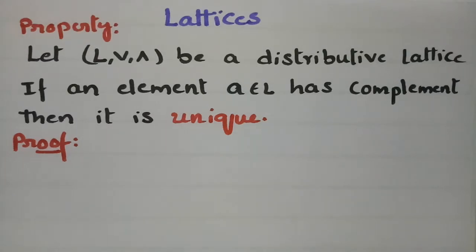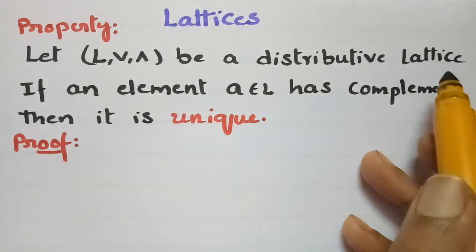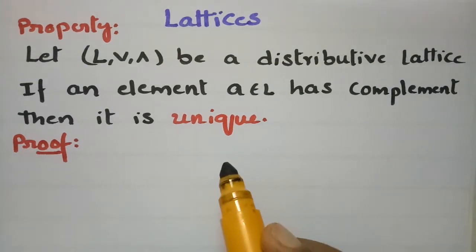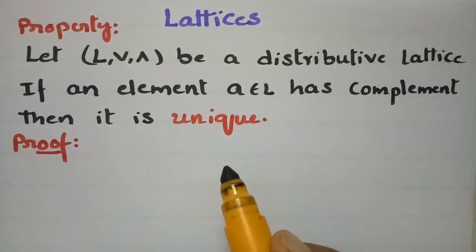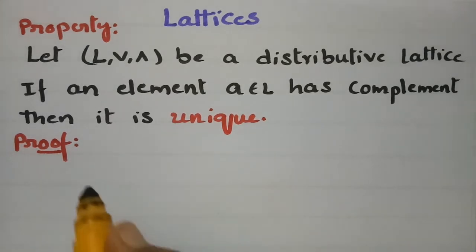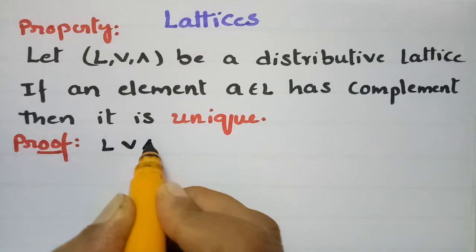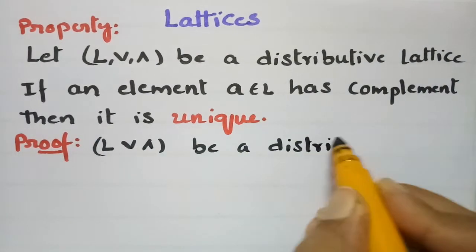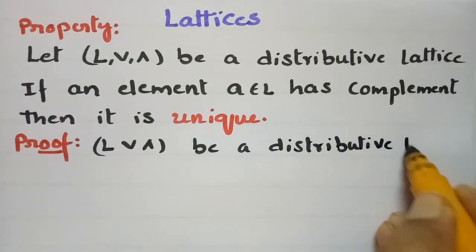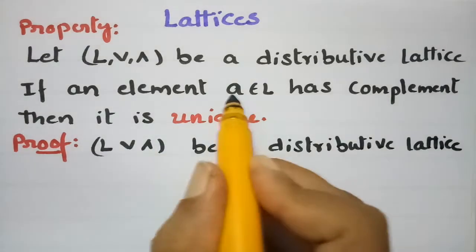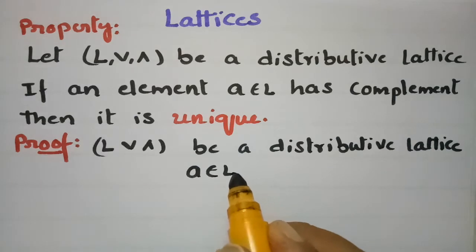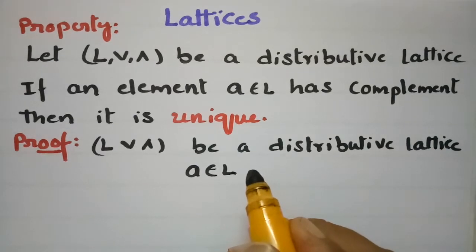Today's video I am going to discuss the properties of lattices. The property here is: if L(join, meet) is a distributive lattice and an element A belongs to L has a complement, then it is unique. So we have a unique complement for each and every element. Given L(join, meet) is a distributive lattice and A belongs to L, if A has a complement, it is unique.